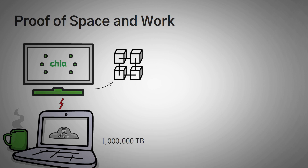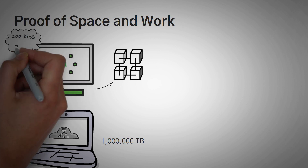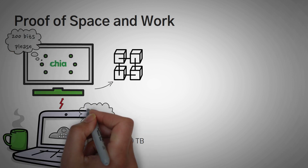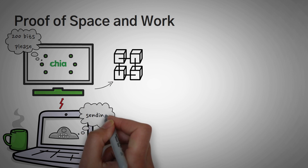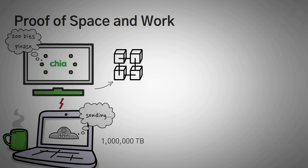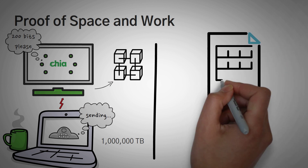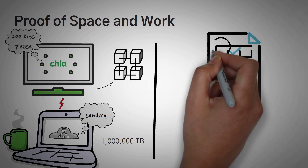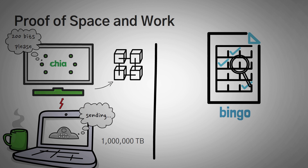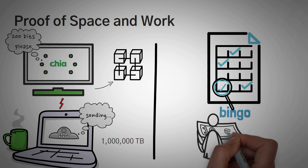For example, there might be one million terabytes of data on the network, and the protocol might be asking you for around 200 bits at a certain location on your hard drive. If you can provide what it originally gave you, it will reward you for allowing it to store data in space on your hard drive and for the work that you did to put it there. Winning is like playing bingo — you fill up your bingo card with the different letters, the network randomly chooses which parts get called, and if you can prove that you held the information the network originally gave you, you win. Bingo.